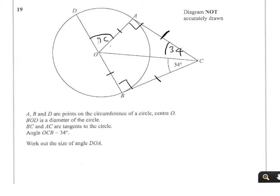And if that's 34 degrees, then these angles are complementary — they add up to 90 — so this will be 56. And 56 again. So if we look, we've got 56, 56 and X on the straight line.